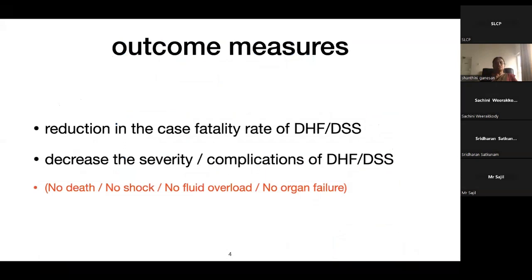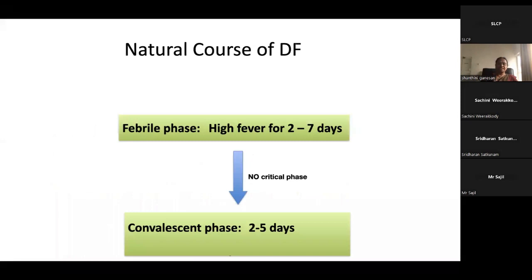What we want as outcome from the guideline as well as from our management: the most important thing is reduction in the case fatality rate of DHF and DSS. We also want to reduce the severity and the complications of DHF and Dengue shock syndrome. That means at the end, we don't want to see deaths or shock, fluid overload, or any organ failure.